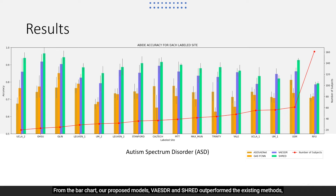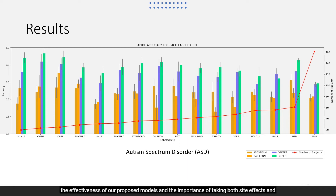From the bar chart, our proposed models VAESDR and SHRED outperformed the existing methods — ASDS, AENET, and GAEFCNN — significantly, with SHRED slightly outperforming VAESDR. This indicates the effectiveness of our proposed models and the importance of taking both site effects and label inconsistencies into consideration when dealing with datasets involving multiple sites.